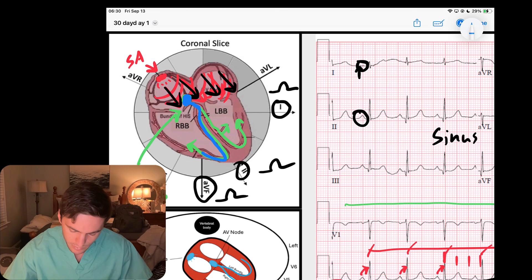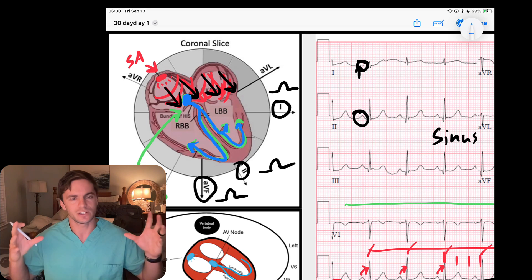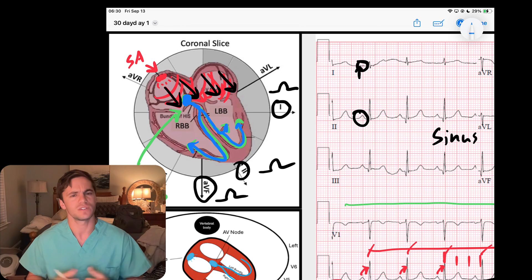Remember, when the AV node sends that signal down, it sends it down the His bundle, which is here, down the right bundle and down the left bundle. That His-Purkinje system—those bundle branches are made of special Purkinje fibers that go really fast. They spread the signal fast through the ventricle so we can have a nice coordinated contraction.